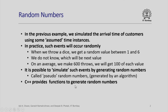As I mentioned in the previous example, we simply assumed certain time instances when the customer will arrive, when the customer will place an order, the number of items ordered, etcetera. In practice we know that such events will occur randomly. For example, when we throw a dice, we get a random value between 1 and 6.